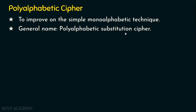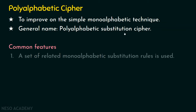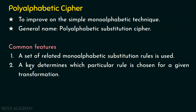What are the features of this polyalphabetic substitution technique? The common features, compared to monoalphabetic, include: first, a set of related monoalphabetic substitution rules is used; and second, a key is used, and this key determines which particular rule is chosen for a given transformation. We will understand the polyalphabetic cipher more elaborately when we see an example. In this presentation, we are going to focus on the Vigenère cipher.